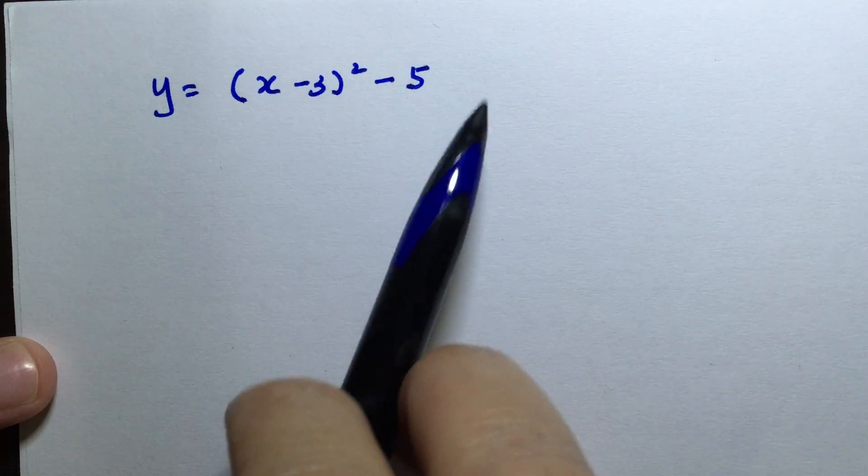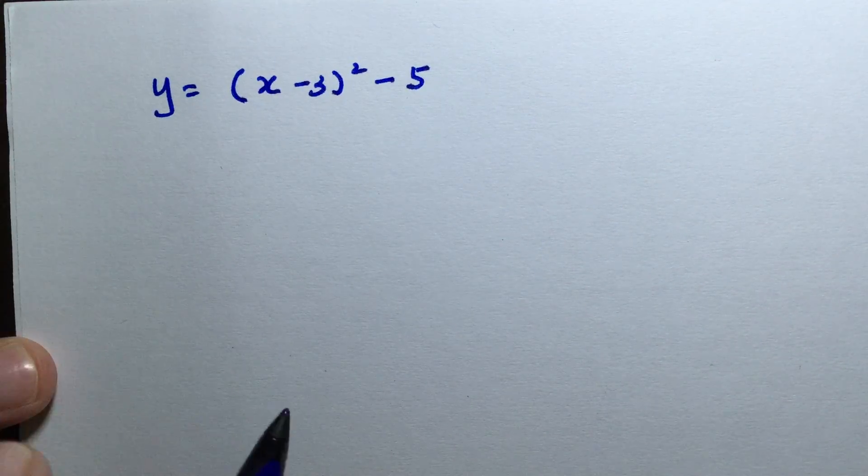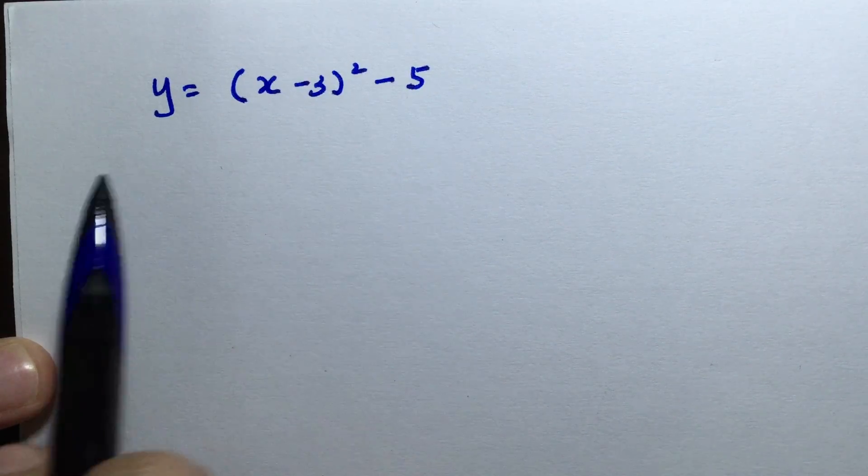From the completed square form, we can actually get two points which we can use to sketch a graph.